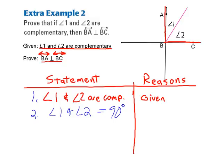Next thing, we now want to put this into an equation. So we'll say measure of angle 1 plus measure of angle 2 equals 90 degrees. Reason is going to be definition of complementary angles.